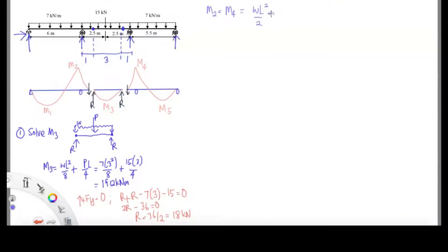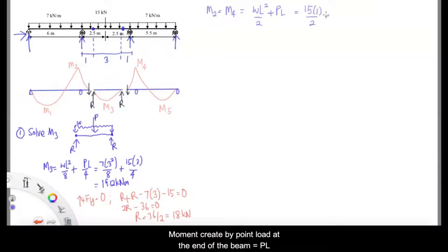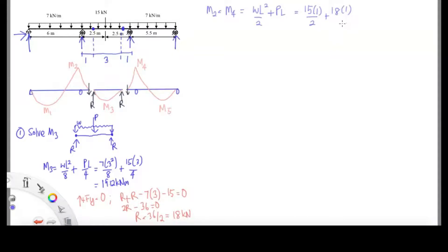Moving forward, we're going to solve moment 2 and moment 4, which have basically similar loading. We're going to use WL²/2, which is the cantilever formula, plus PL. P is basically the reaction force R, and L is the distance between the support and the pin — which is 1 meter, the one calculated earlier.